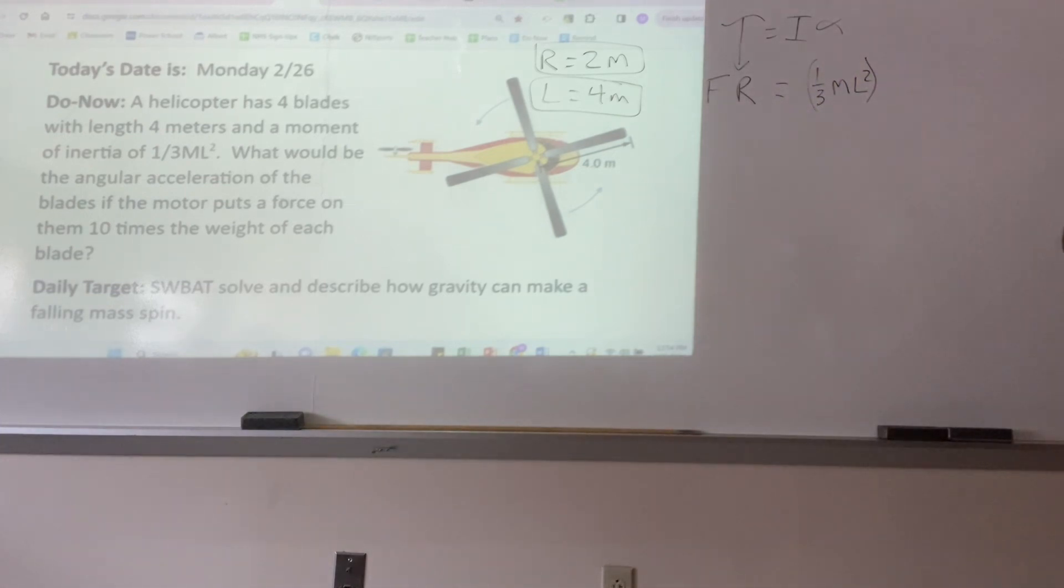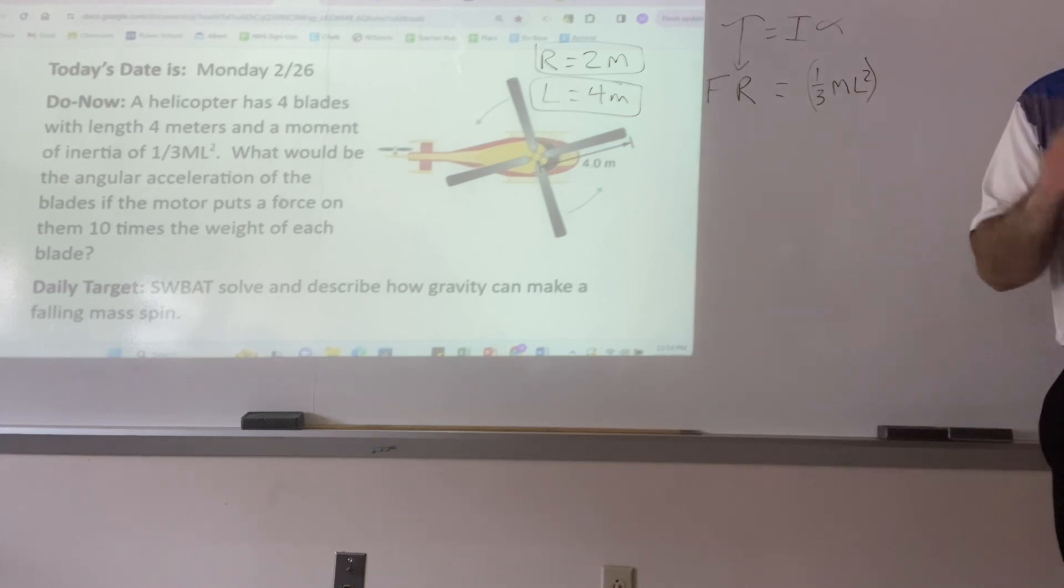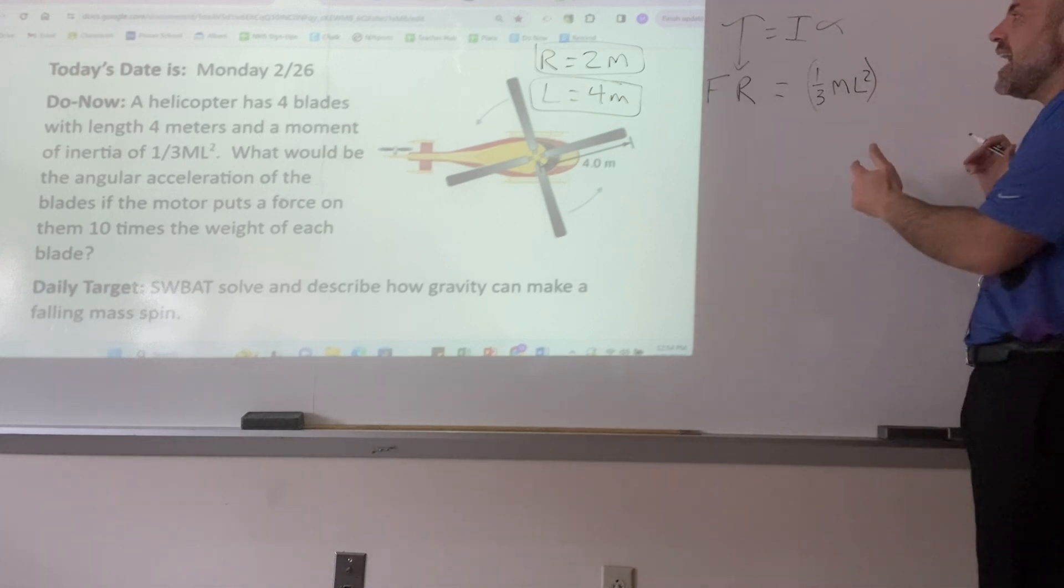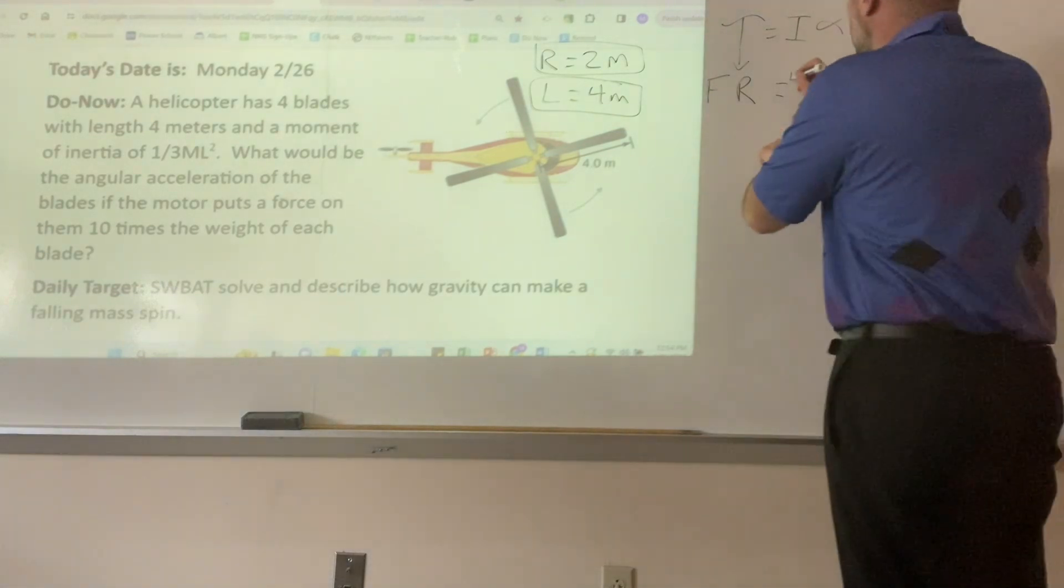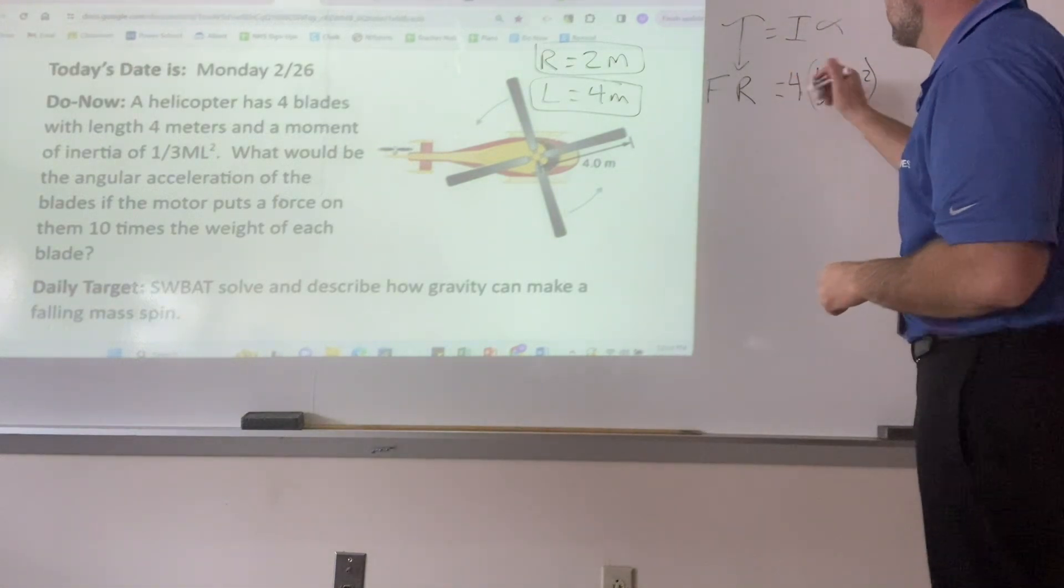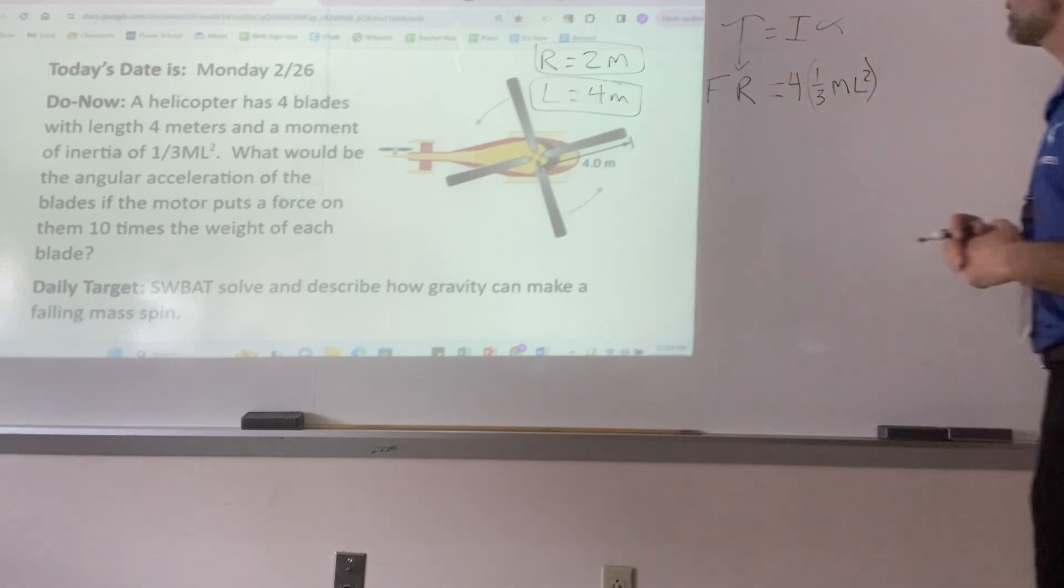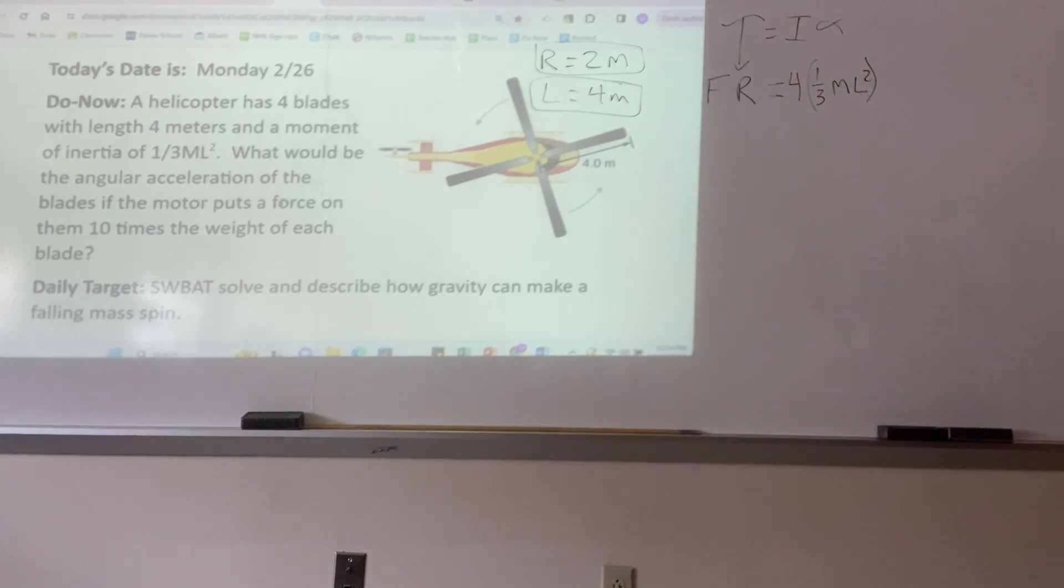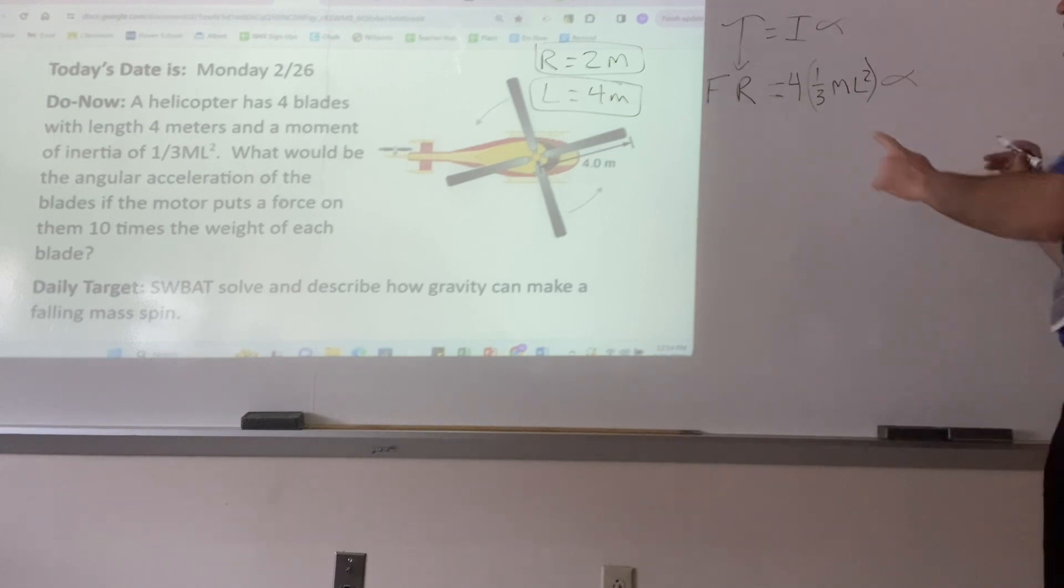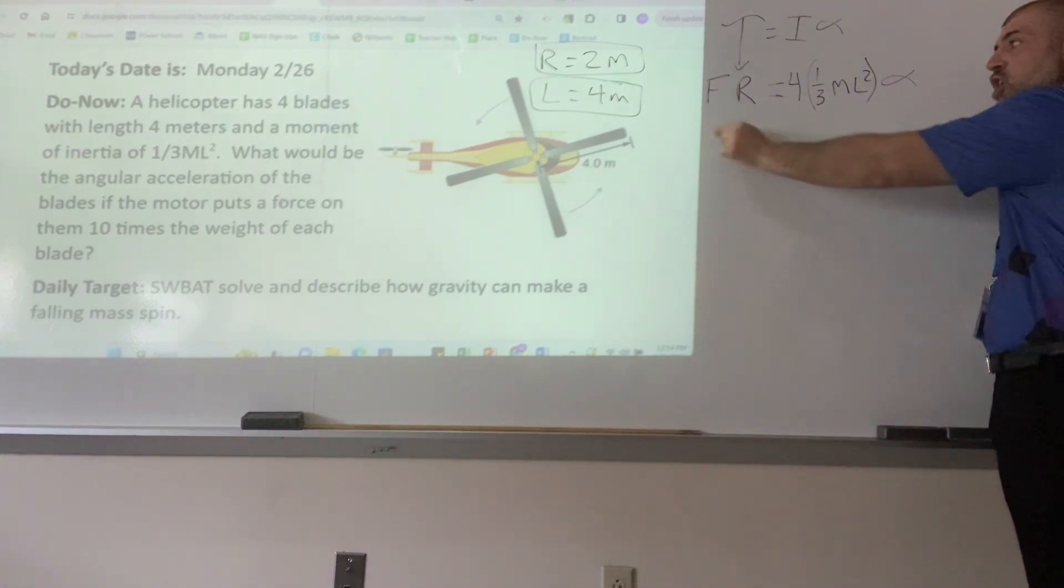Now with that being said, there's four of them. There's four blades that all have an I of 1 third ML squared. It is not something to overthink. How do I say there's four of these? Let's multiply it by four. There's four of them. Four, 1 third ML squared. And then lastly, that's going to be times alpha. This is the important part right here. This is the chunk of this equation of this problem that I want to make sure you have understood.